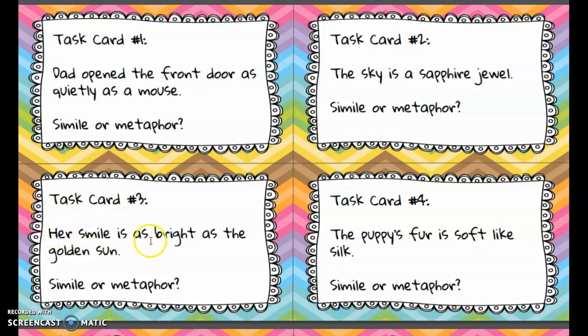Number three: her smile is as bright as the golden sun. Here the author is trying to help us imagine how bright her smile is. Similes are great when you're trying to help someone visualize or imagine something.